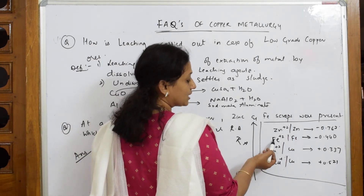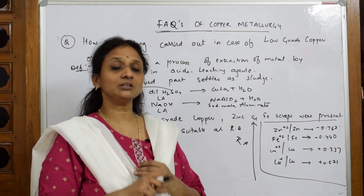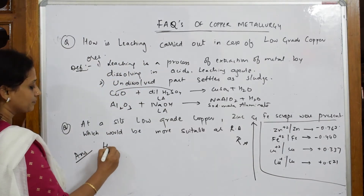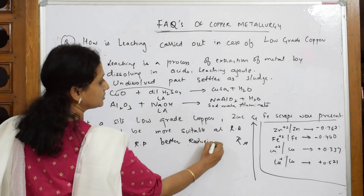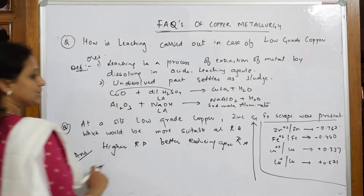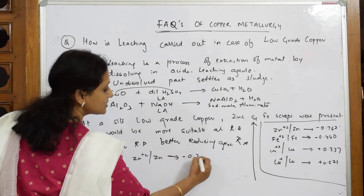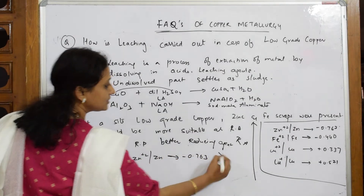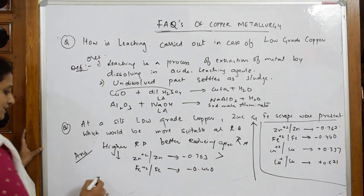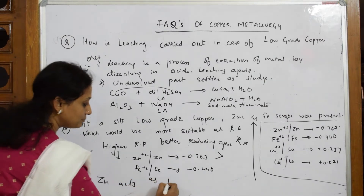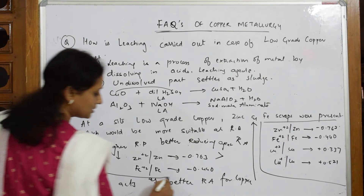Above copper is iron, and above iron is zinc. The zinc electrode potential is −0.763 V. Higher the reduction potential, better is the reducing agent. So: Zn²⁺/Zn = −0.763 V, which is greater than Fe²⁺/Fe = −0.44 V. Therefore, zinc acts as the better reducing agent for copper. That is your full one-mark answer.